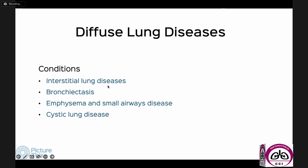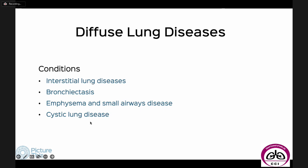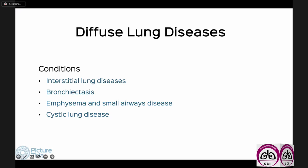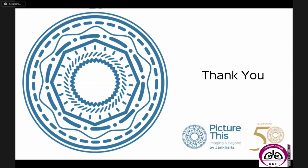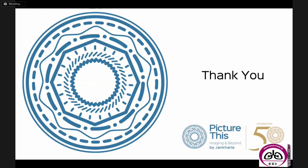In summary, today I started with bronchiectasis, then covered emphysema and small airways disease, then interstitial lung diseases, and finally cystic lung disease. This is a basic introduction to what we do on a day-to-day basis — none of this is theoretical, it's all something we do regularly. I also put up a case every 7 to 10 days at ctchestreview.com — you can subscribe and get an email with each case automatically. Thank you so much for listening, and I'm happy to take questions.